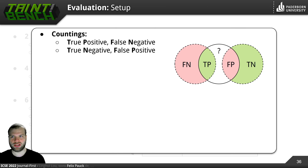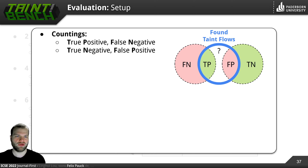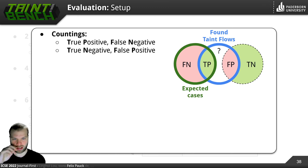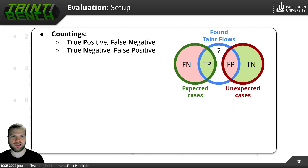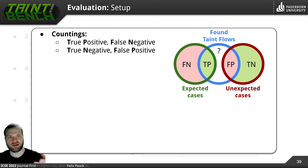Before looking at the results, let me briefly talk about the evaluation metrics: precision, recall, and F-measure and what they mean in our context. First we count our findings. Let's assume this circle describes the taint flows actually found by an analysis tool, and this green circle represents the expected cases in our TaintBench baseline. If we find a taint flow that matches an expected case, then it is a true positive. If we don't find it, it's a false negative. For the unexpected cases, if an unexpected case matches a taint flow that was actually found, then it is a false positive. And if an unexpected case does not have a matching counterpart, then it's a true negative.